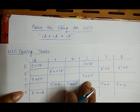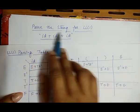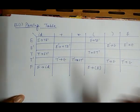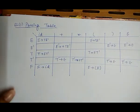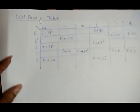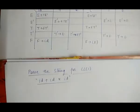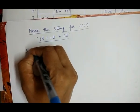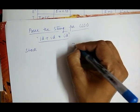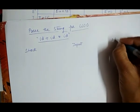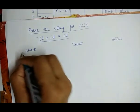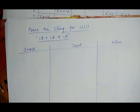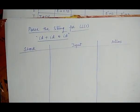We have to check whether this string is acceptable for this parsing table and the particular grammar or not. To check this, we create a table with three columns: Stack, Input, and Actions.